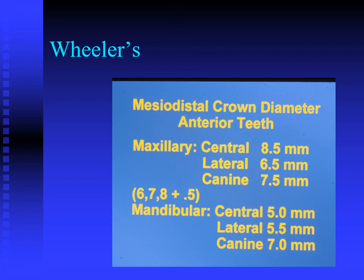You'll also need to know mesiodistal crown diameters of all permanent teeth. For maxillary incisors: the lateral incisor is 6.5 mm at the height of contour, which corresponds to the interproximal contact area; canines are 7.5 mm; and the maxillary central incisor — the widest of all incisors — is 8.5 mm. In the mandibular arch: the central is 5 mm, the lateral incisor is 5.5 mm, and the canine is 7 mm. Keep these mesiodistal crown diameters and eruption sequences in mind as you study.